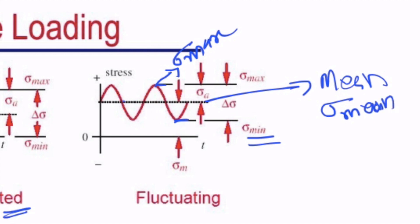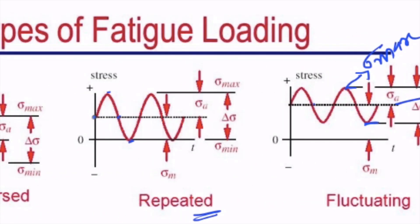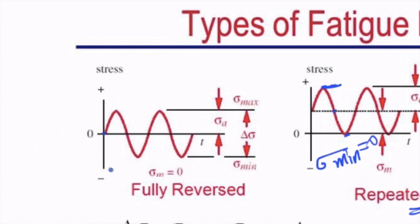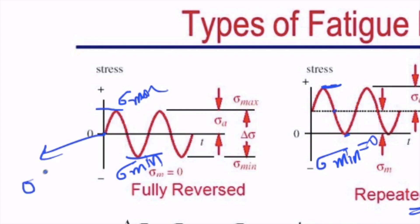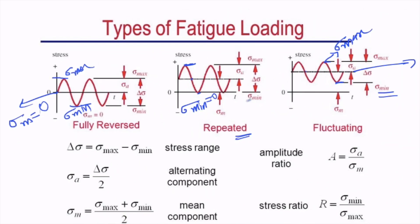Similarly, for repeated stress, there is a maximum stress value and an amplitude, while the minimum value is zero — so sigma minimum equals zero. For a fully reversed cycle, we have a positive maximum value and a negative minimum value. The mean value — the average — of any fully reversed stress cycle will be zero, because it goes the same magnitude in both positive and negative directions.